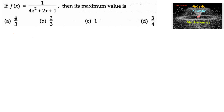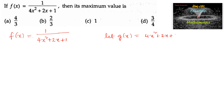If f(x) is equal to 1 upon 4x² plus 2x plus 1, then its maximum value is to be found. Let us consider g(x) equal to 4x² plus 2x plus 1. Since it is a quadratic expression in the form ax² plus bx plus c, its discriminant is b² minus 4ac.